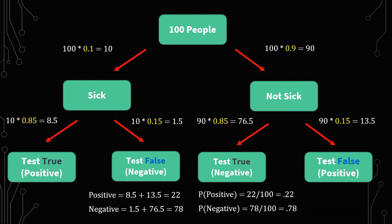And so when you add up all the positives here, the true positive and the false positive, you get 22. And then converting that to the probability of 22 over 100, you get 0.22. And then the same thing for negatives. You get 1.5 plus 76.5 to give you 78, or 0.78 for the probability of negative.